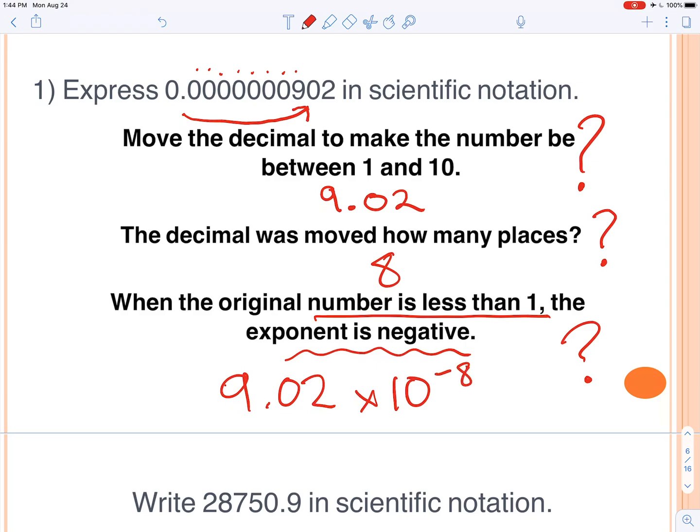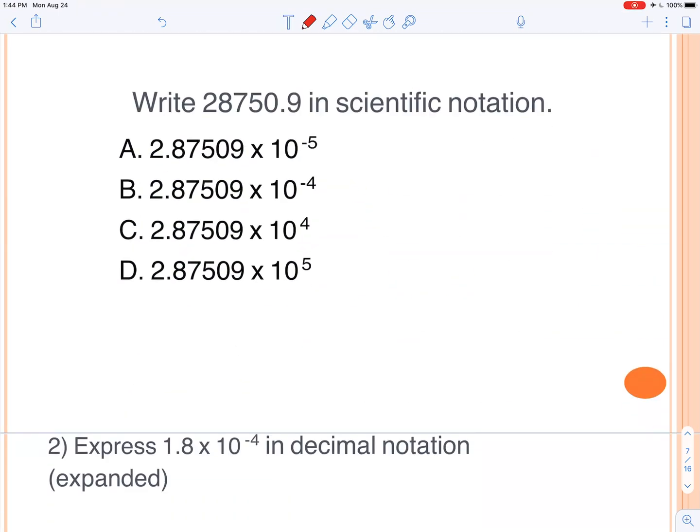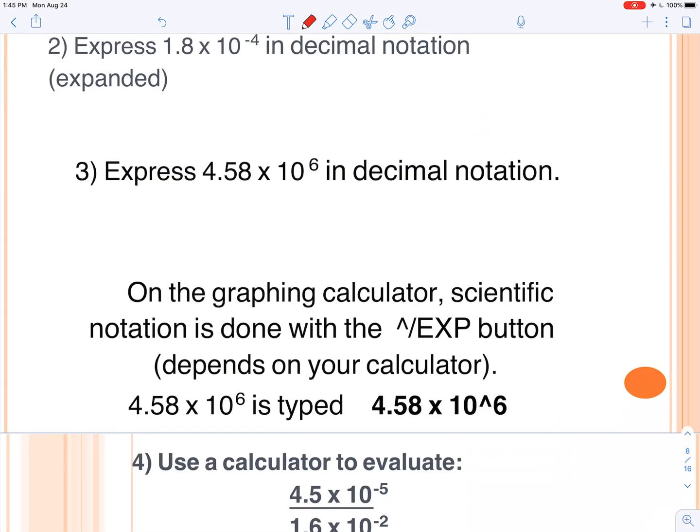All right, let's keep it going. How about we do one more practice here? Write this number in scientific notation. All right, it's a big number, so we can already eliminate these first two answers. Now it's just a matter of figuring out how many spots we moved it. So one, two, three, four spots. It's going to be answer choice C, 1.8.